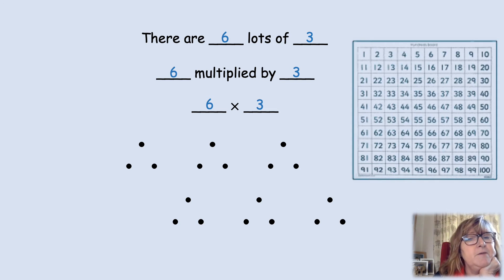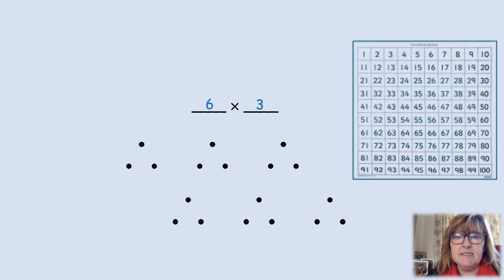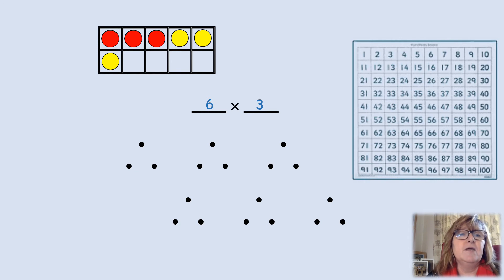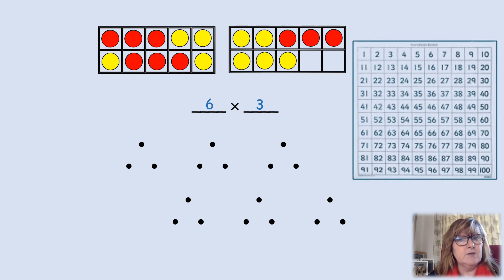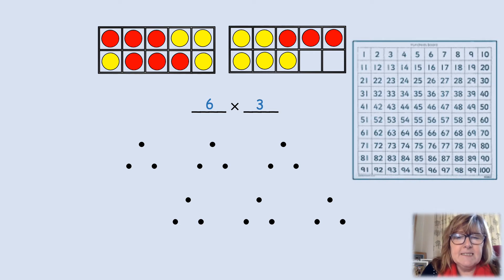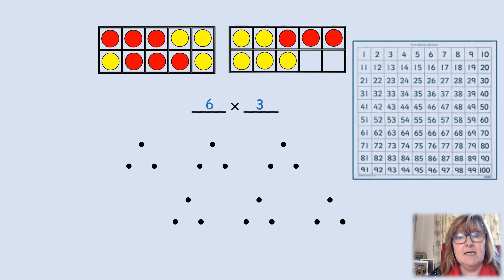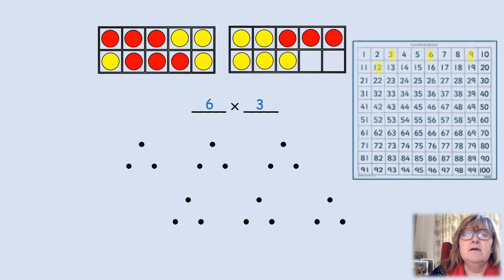But how am I going to work that out? I'm not very good at counting my threes, so I think I might get a tens frame to help me. That's one group of three, two groups of three, three groups of three. I need another tens frame. Four groups of three, five groups of three, six groups of three. I can look at those two tens frames and know that I've got two less than 20, which makes 18. But if you really wanted to make sure, you could count in threes: three, six, nine, 12, 15, 18. That's another way we could have done it.